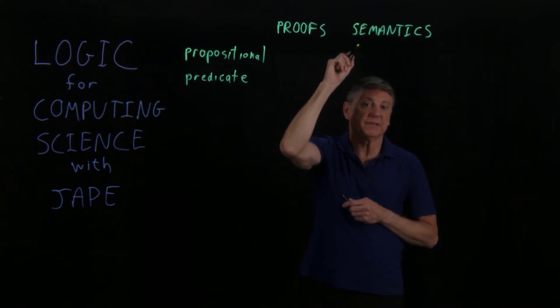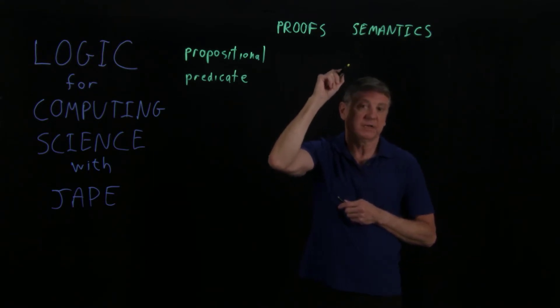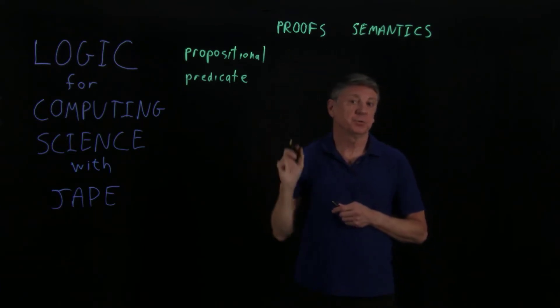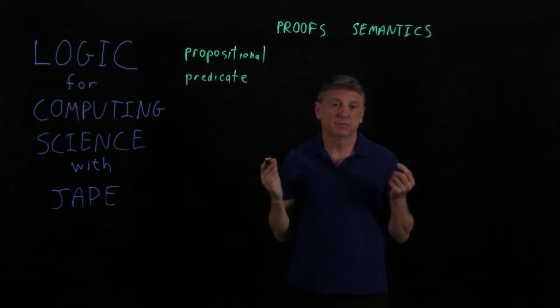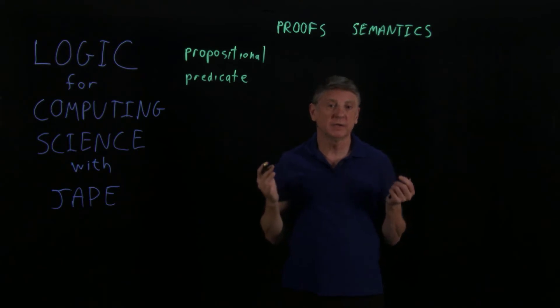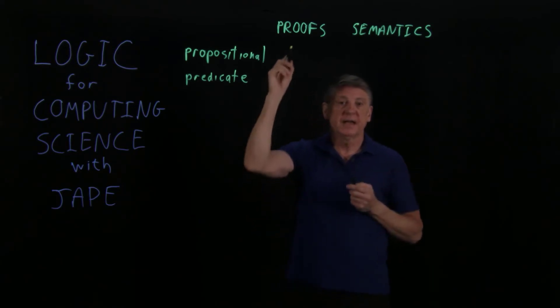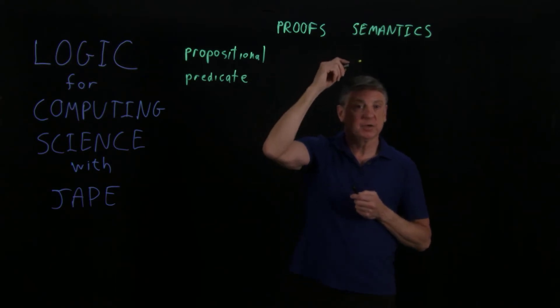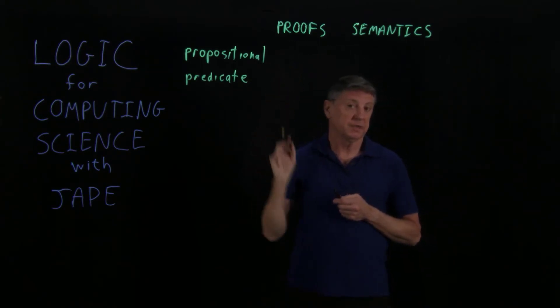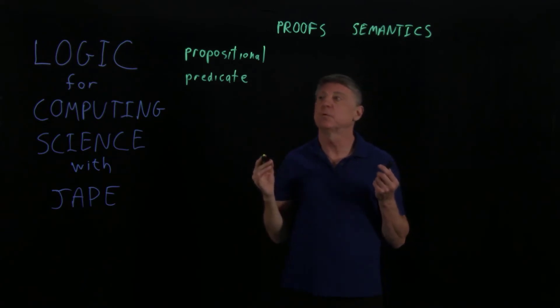And similarly, if there's a semantic entailment, there's a proof. And that's a very powerful thing. And what it means is that we can really rely on the reasoning that we're going to develop in this course, that if we can prove something, it's going to be valid. And if something is valid, there will exist a proof for it.